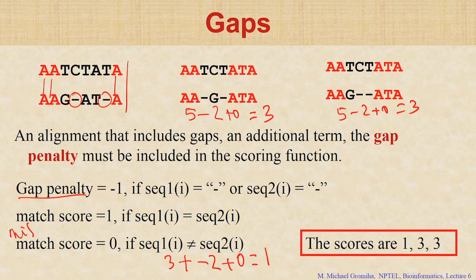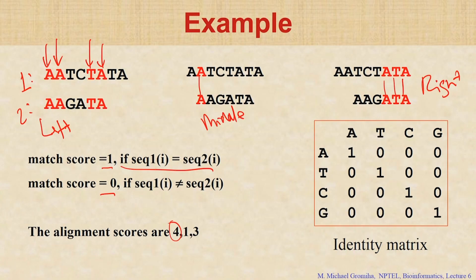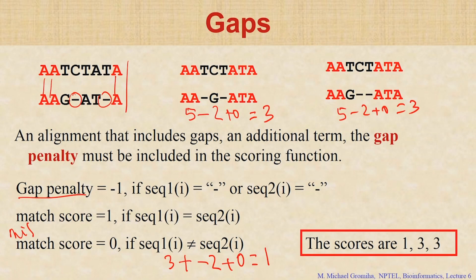So the earlier alignment without gaps gave scores of 4, 1, 3. Now aligning with gaps we get scores of 1, 3, 3. Now the next question is: if you have gaps and mismatches, whether we need to give the same weight or different weight. Before that, I give another example.